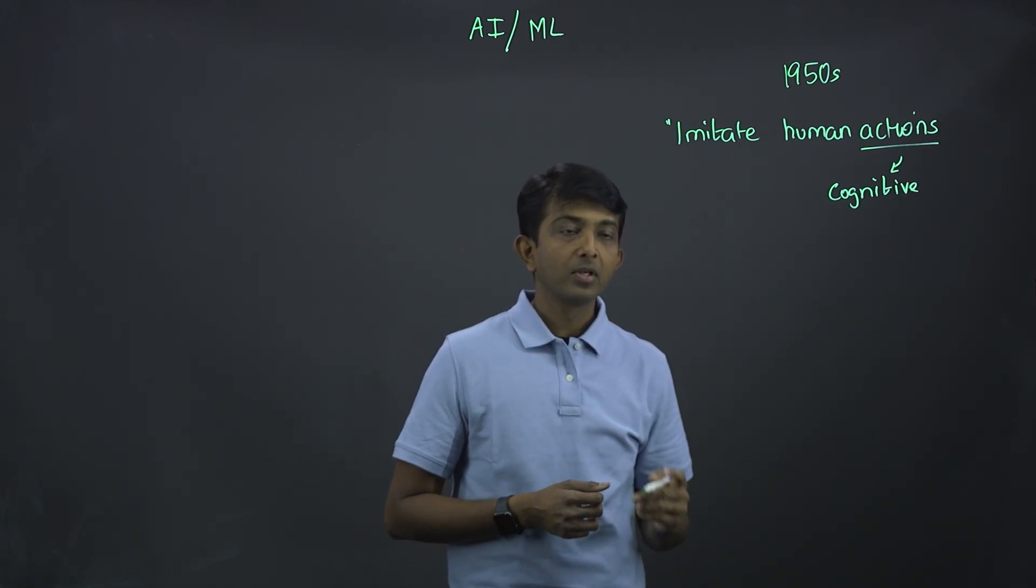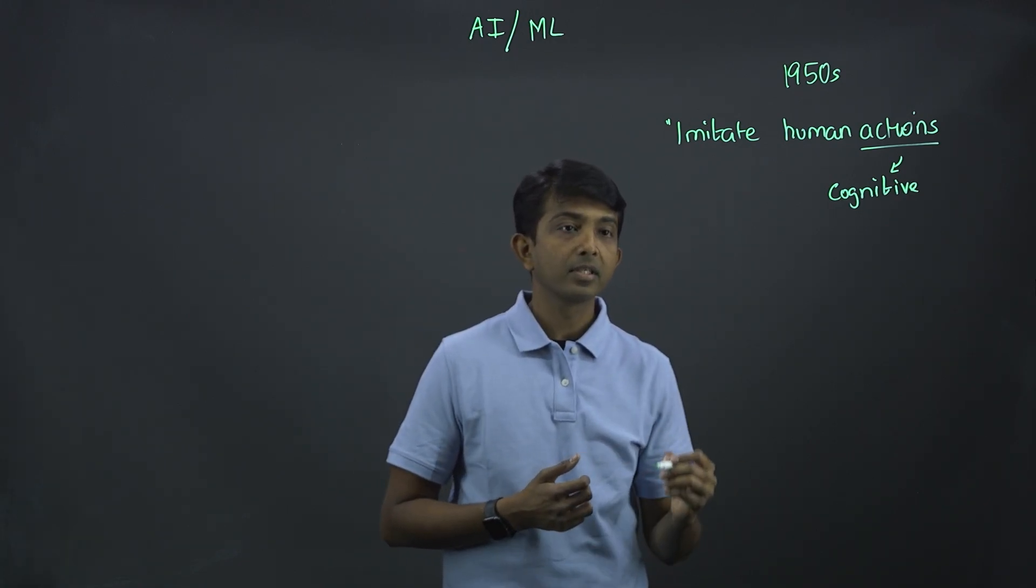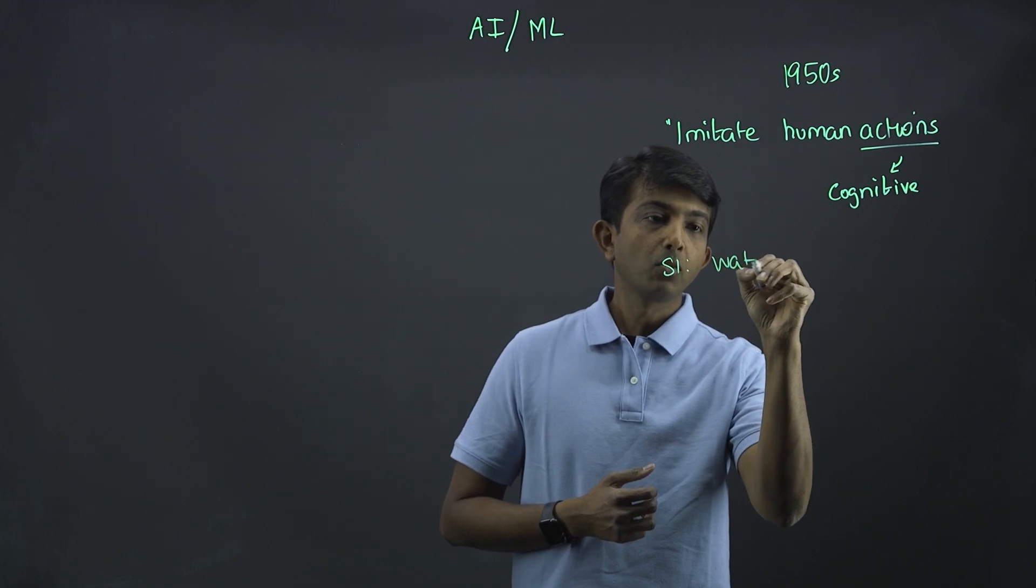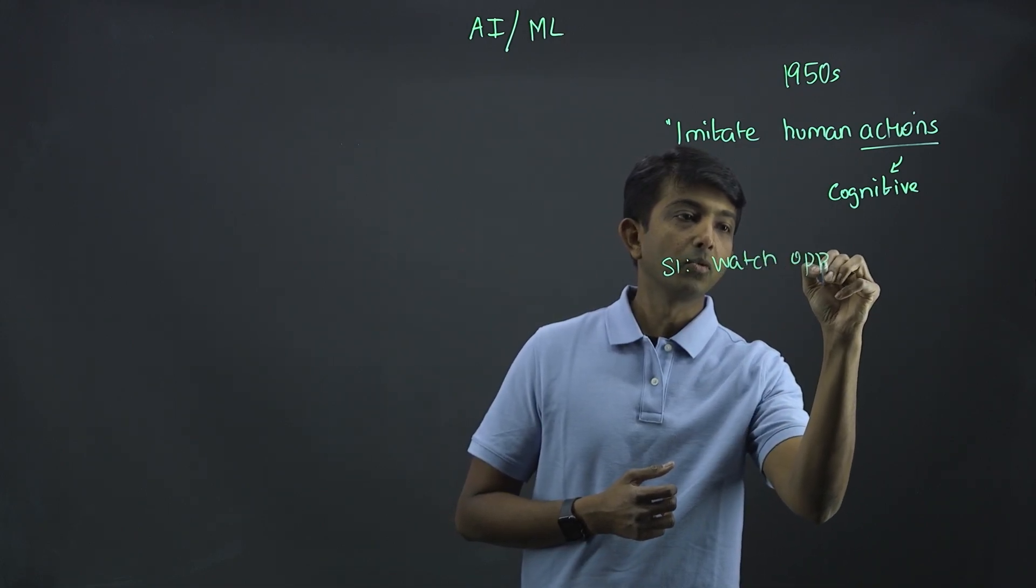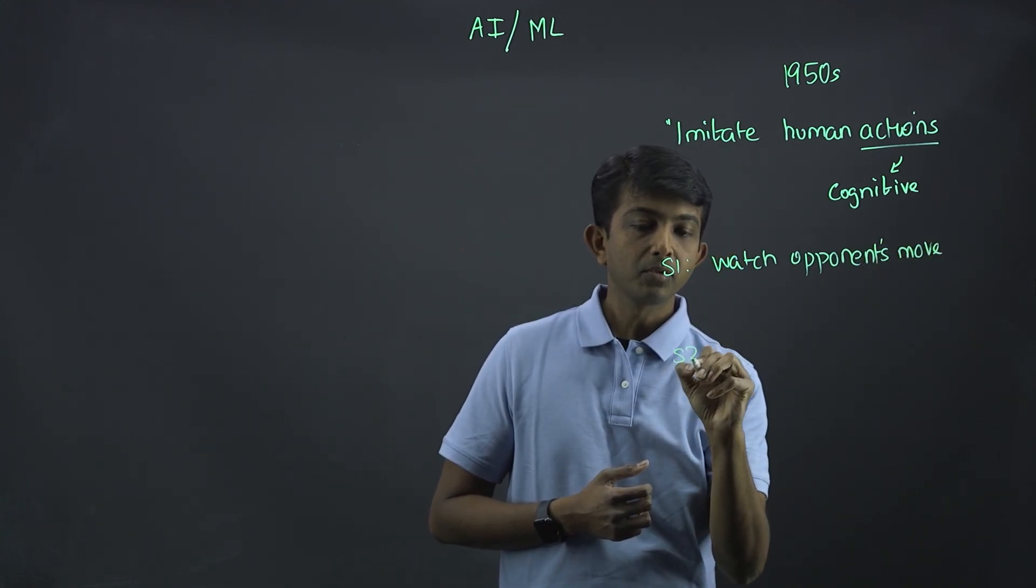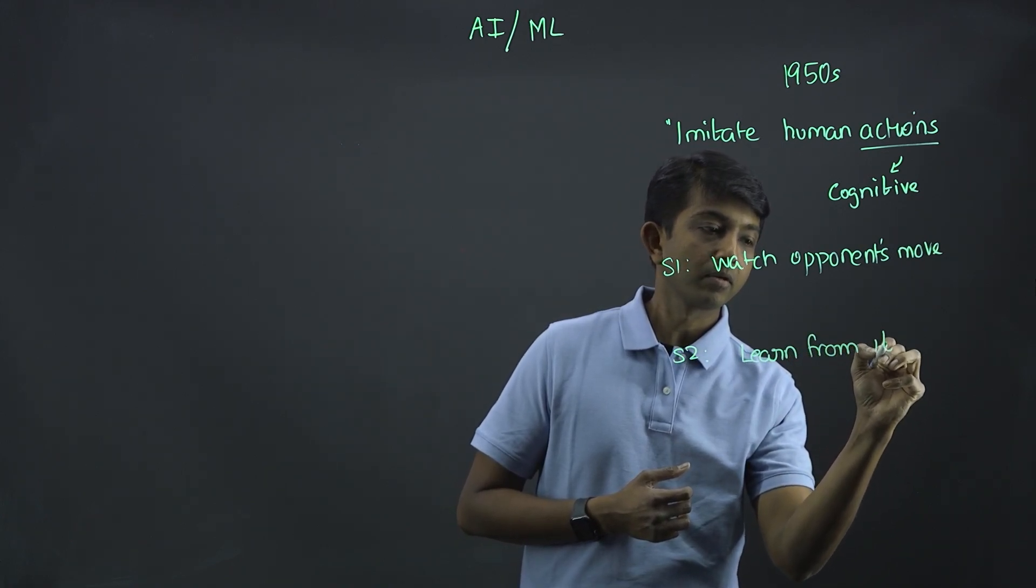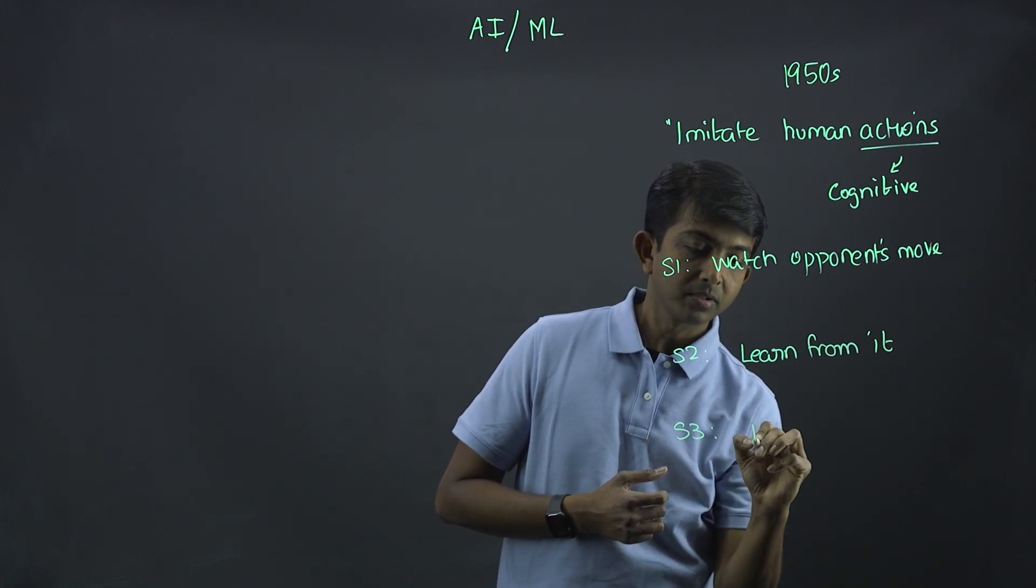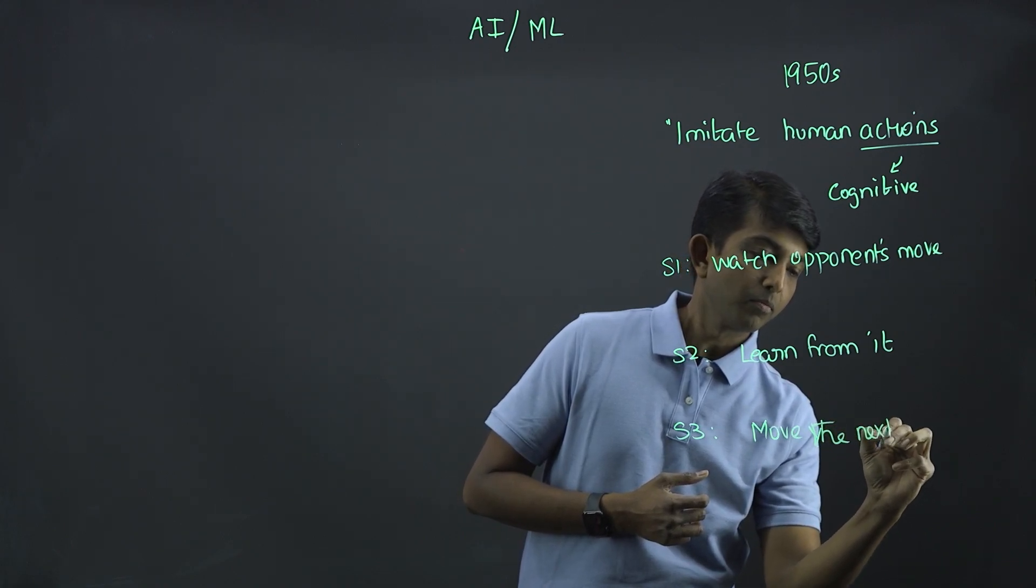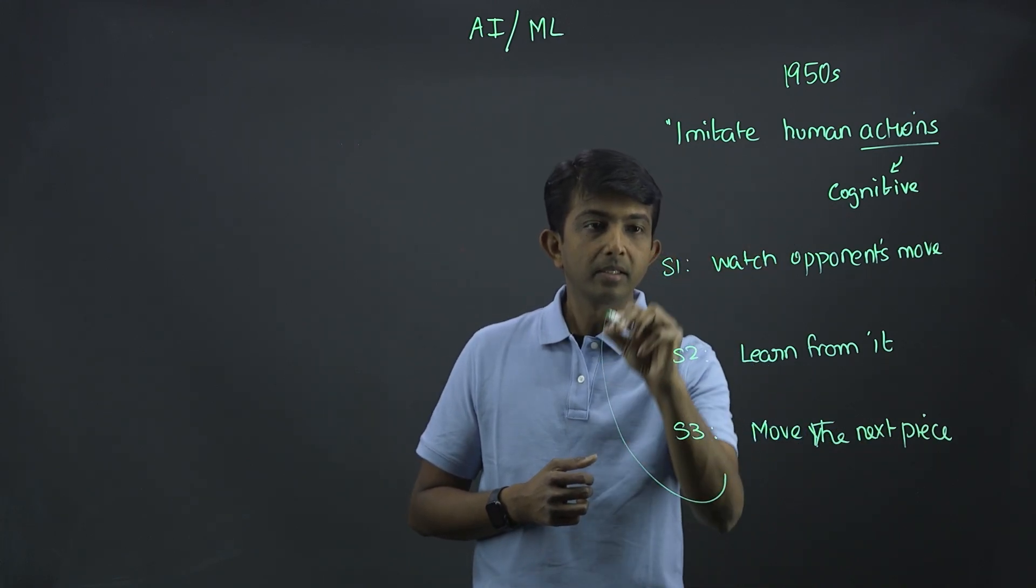Let me explain that with an example. One of the earliest AI programs designed was to play a game of checkers, which had a few steps. Step one was to watch the opponent's move. And step two was learn from it. And step three was move the next piece.